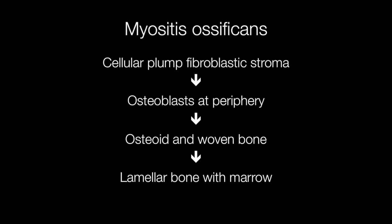The lesions start with cellular plump fibroblastic stroma with a periphery of osteoblasts. Osteoid and woven bone then develop, and finally lamellar bone and bone marrow may be present.